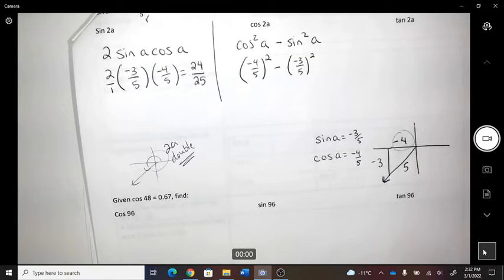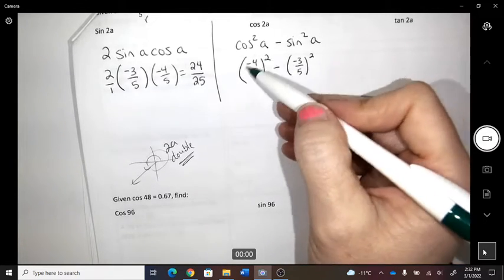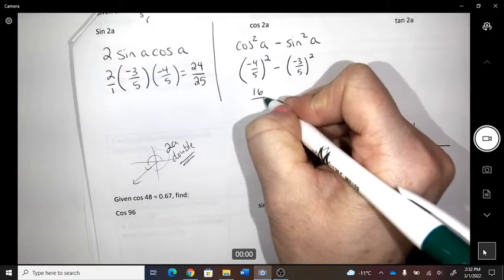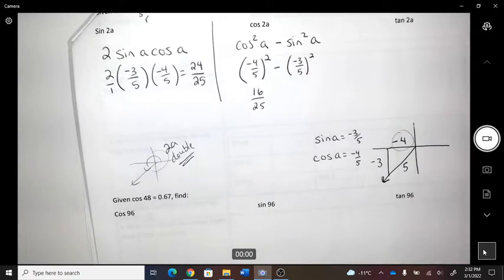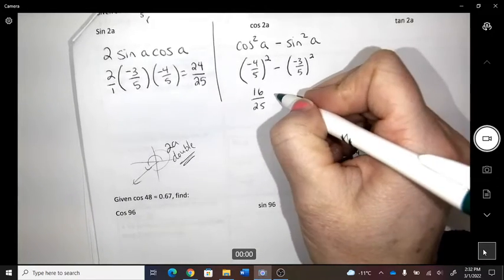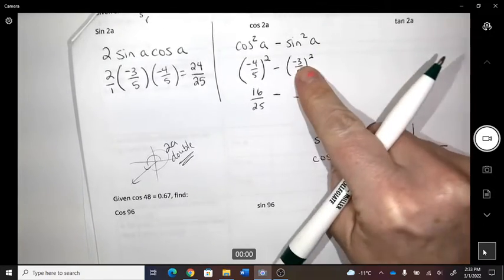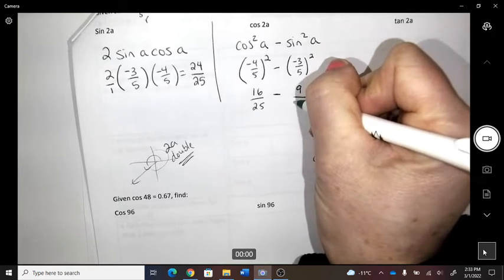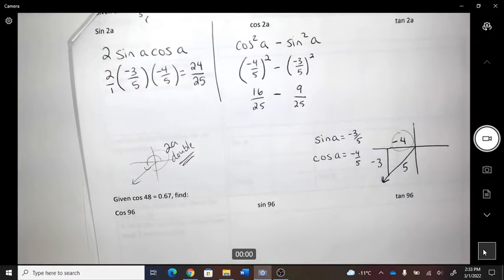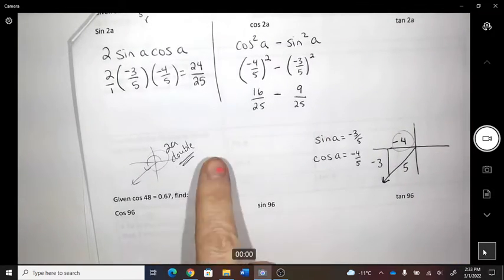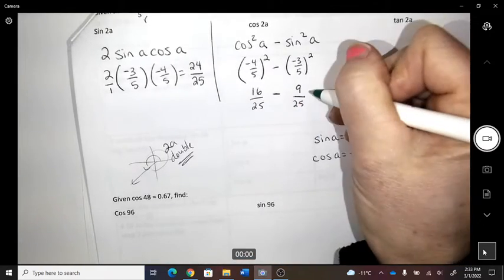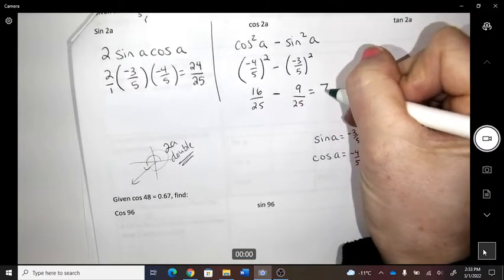So the cos value is negative 4 fifths, and I've got to square that. Subtract the sine value squared. So here's where I get mistakes. People not understanding their negatives and positives. So please be careful. When I square this, it's going to be 16 over 25, positive. And then I'm going to subtract. And then this is going to turn into positive 9 over 25. But there was a subtract.